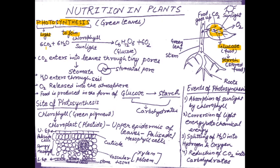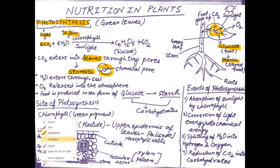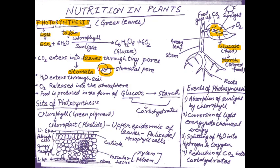What are the basic steps of photosynthesis? First, carbon dioxide — six molecules of carbon dioxide are involved. Carbon dioxide enters into the leaves through tiny pores called stomata. These are the stomatal pores which are surrounded by two guard cells, and this is the stomatal pore which helps the entry of carbon dioxide into the leaves.